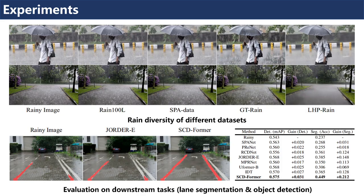To evaluate performance on real raining images, we train SC-deformer on the synthetic dataset RIN100L, as well as real datasets SPA data, GT-Rain, and LHP-Rain respectively, and test on other real raining images. The model trained on LHP-Rain has the best deraining performance. Moreover, we further found that image deraining results benefit high-level tasks such as scene segmentation and object detection.